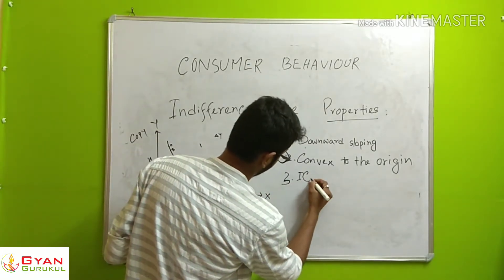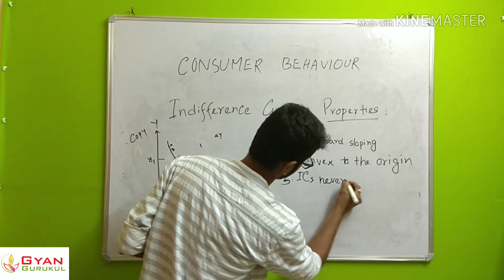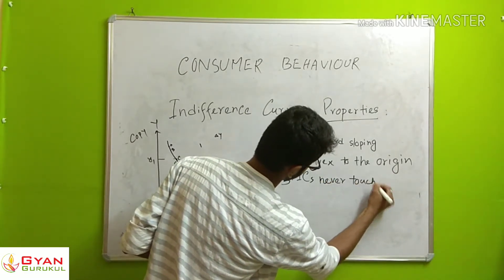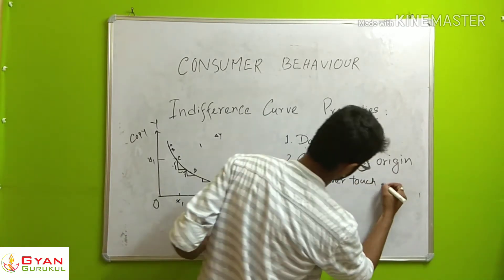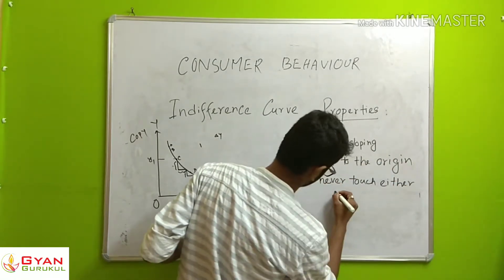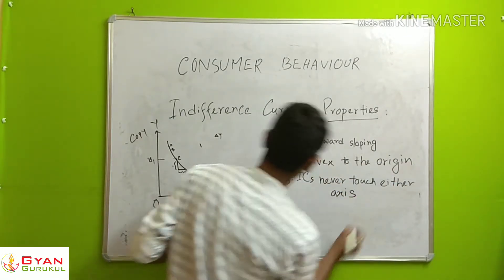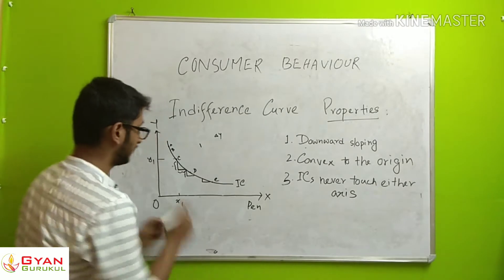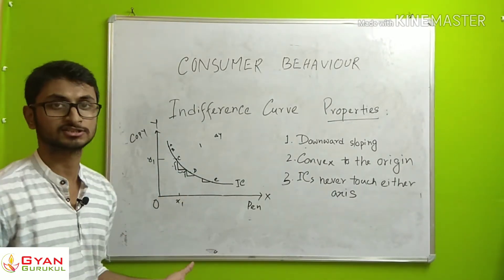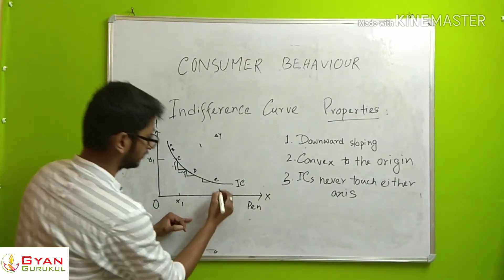Property number three: the indifference curve never touches the X-axis or the Y-axis. It cannot touch either axis.